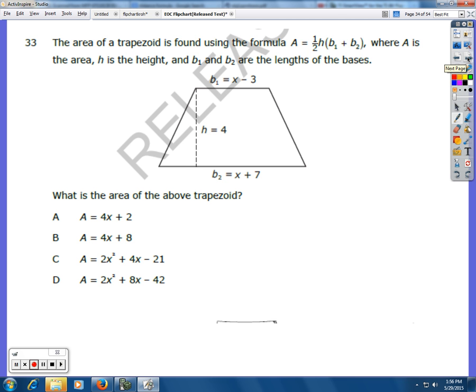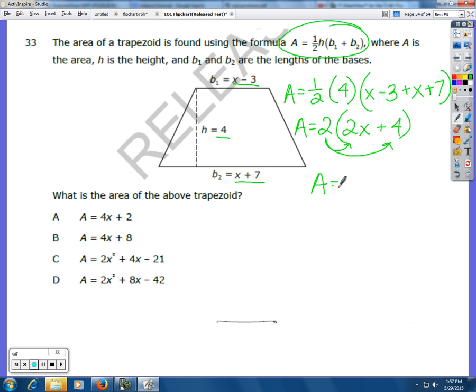Number 33. The area of a trapezoid is found using this formula right here. And then you're given the height and then base 1 and base 2. And then they want you to write the area of the trapezoid as a function. So I'm just going to follow this formula. Area is 1/2 times the height and it says here the height is 4 times base 1 which is X minus 3 plus base 2 which is X plus 7. And then I'm just going to simplify my formula here. So 1/2 times 4 is 2. Inside the parenthesis X plus X is 2X. Negative 3 plus 7 is 4. And then I distribute this 2 out. And my area is 4X plus 8.